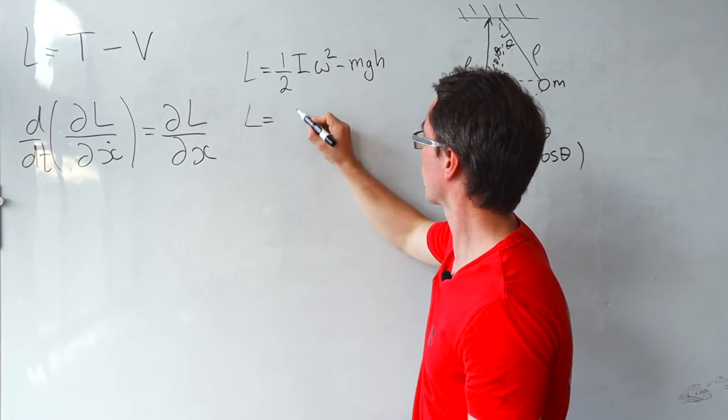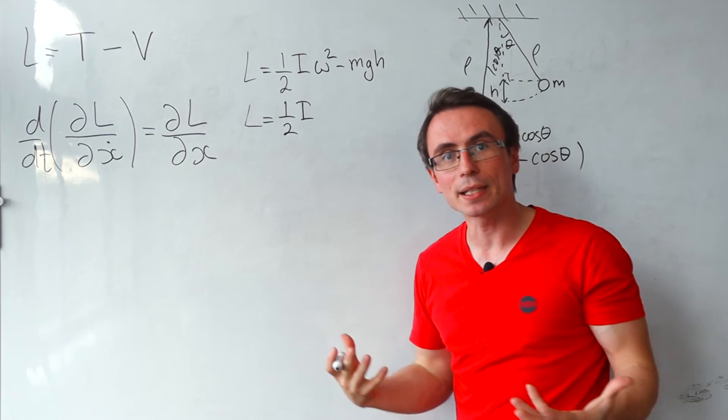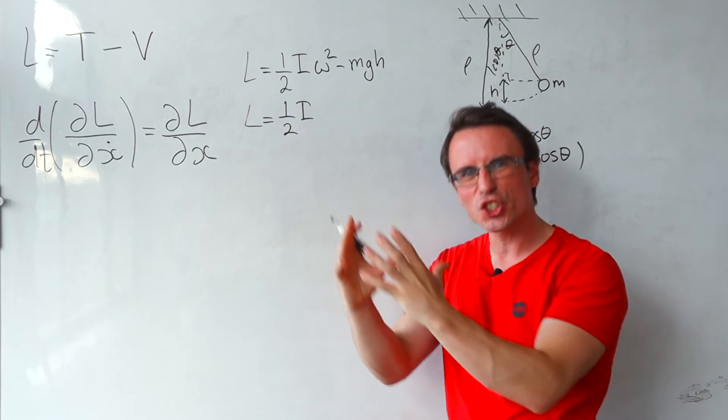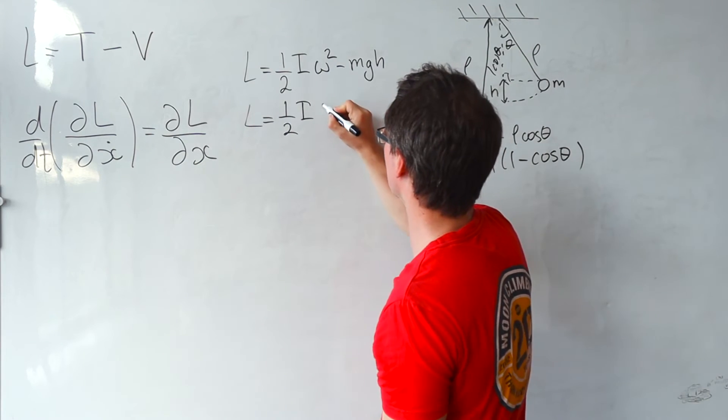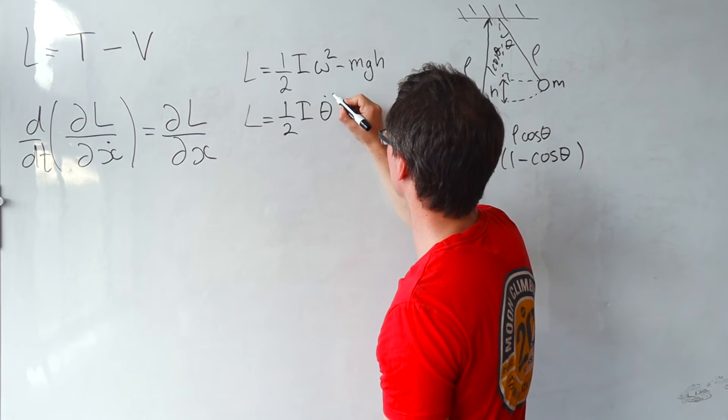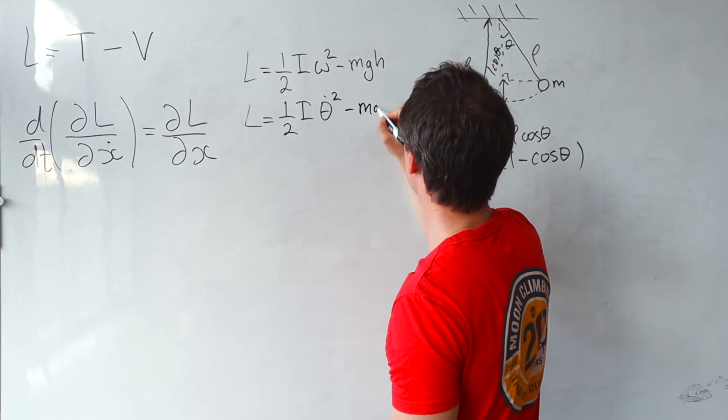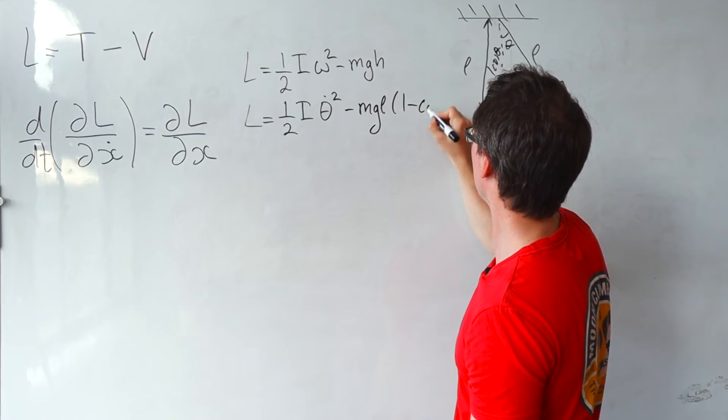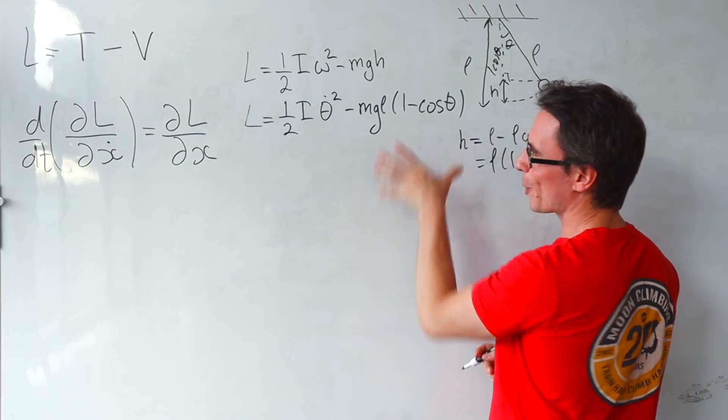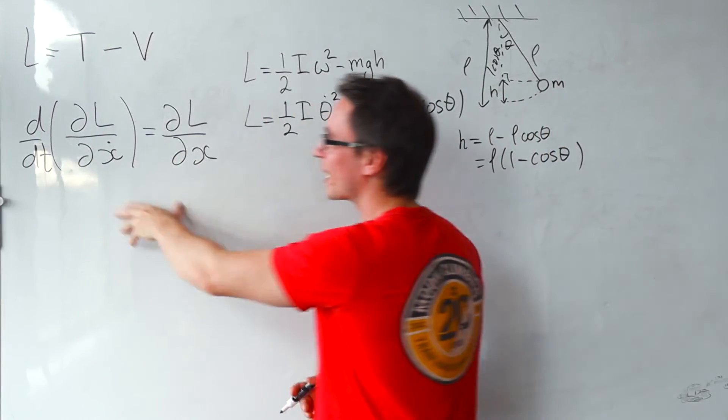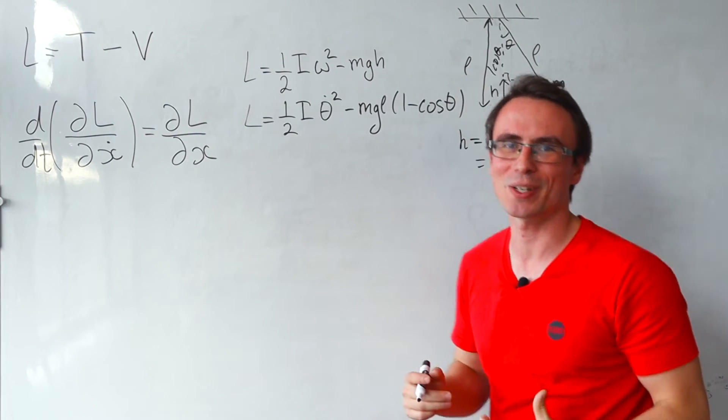Well, subbing back this into the Lagrangian, this will be given by a half. Omega is the angular velocity, the rate of change of the angle, essentially of the angular displacement. So we can just write this as theta dot squared, take away MgL times 1 minus cos theta. I think we have our Lagrangian and we can sub this back into the almighty Euler-Lagrange equation and get our equation of motion.